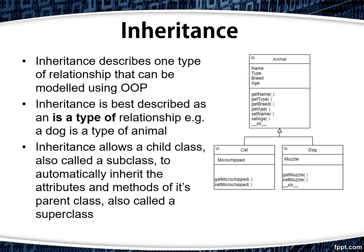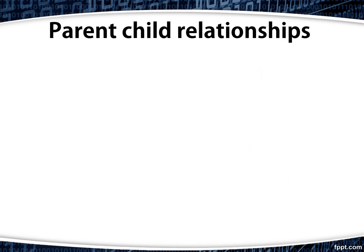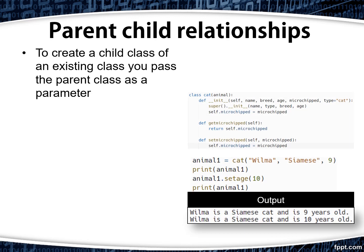This means that our dog and cat classes in the example to the right, as well as having their own attributes and methods, also have access to all of the attributes and methods of the animal class. To create a child class of an existing class, you pass the parent class as a parameter. So here, where I've declared class cat, I've passed animal as a parameter.